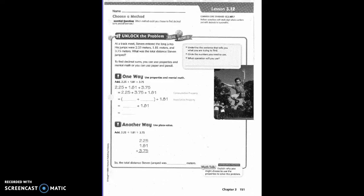Fifth grade, Chapter 3, Lesson 12. At a track meet, Stephen entered the long jump. His jumps were 2.25 meters, 1.81 meters, and 3.75 meters. What was the total distance Stephen jumped?